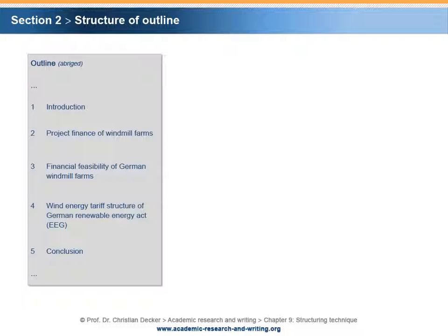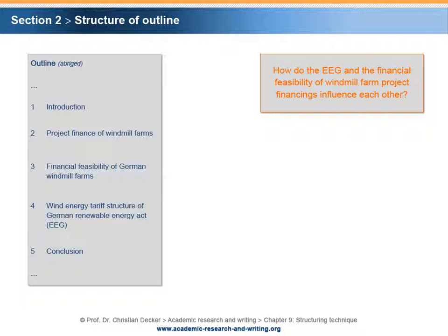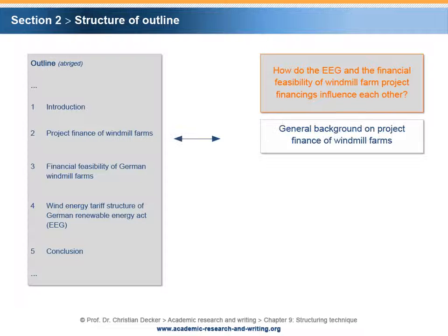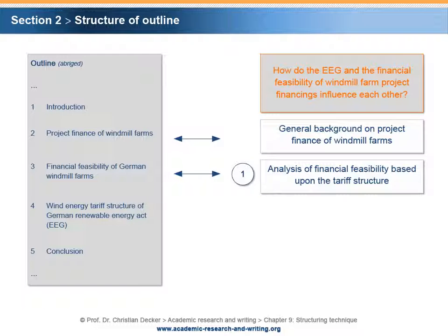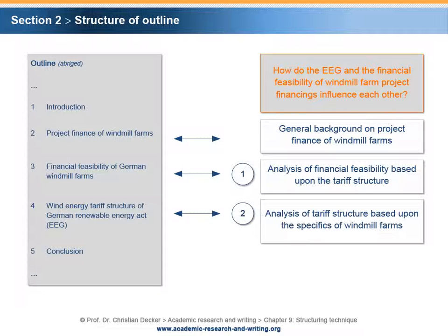In the course of the interpretation of the topic, we have decided for a functional approach. How do the EEG and the financial feasibility of windmill farm project financings influence each other? The second chapter of the outline can be formulated in a way so that it will introduce the general background of project finance in the context of windmill farms. The third chapter could analyze the financial feasibility based upon the tariff structure. Vice versa, the fourth chapter could analyze the tariff structure based upon the specifics of windmill farms. Please note that while applying a functional approach to the topic, we discussed the interdependencies in two separate main chapters.